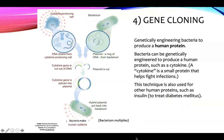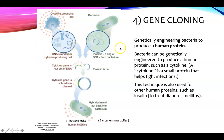Gene cloning is when scientists use a genetically engineered bacterium to produce a human protein. The bacteria can be engineered to produce a human protein such as a cytokine — a small protein that helps fight infections. The technique can also be used to make other human proteins such as insulin, which treats diabetes mellitus. You take a DNA strand from a cytokine-producing cell, and a plasmid — a little ring of DNA from a bacterium — then the cytokine gene is cut out and spliced right into the plasmid.